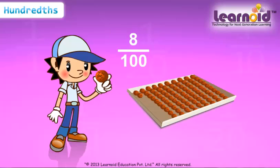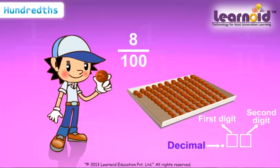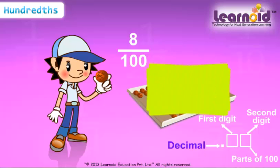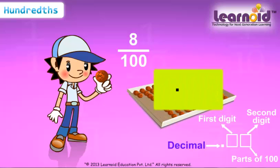The same thing we can write using decimals. The second digit after the decimal indicates a part out of 100. So we can write it in decimal as .08. Parts out of 100 are placed at the hundredths place.